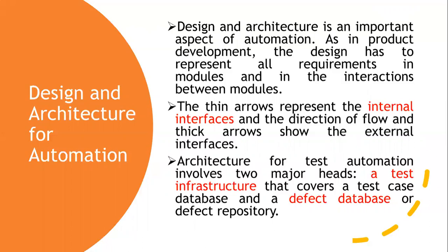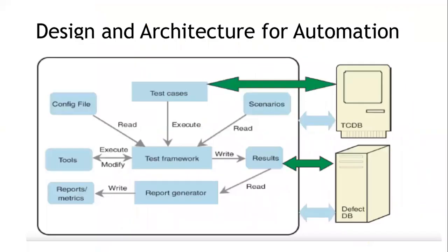The next topic is design and architecture for automation. Design is a very important concept because it captures all the requirements in the modules and the interactions between the modules. There is a pictorial representation of this design. The center part is the automation framework, with modules and internal interfaces shown by links. Topics to be covered include: external modules — TCDB (test case database) and defect DB — configuration file, scenarios, assessment, test cases, test framework, tools, results, report generating, and reports on metrics.